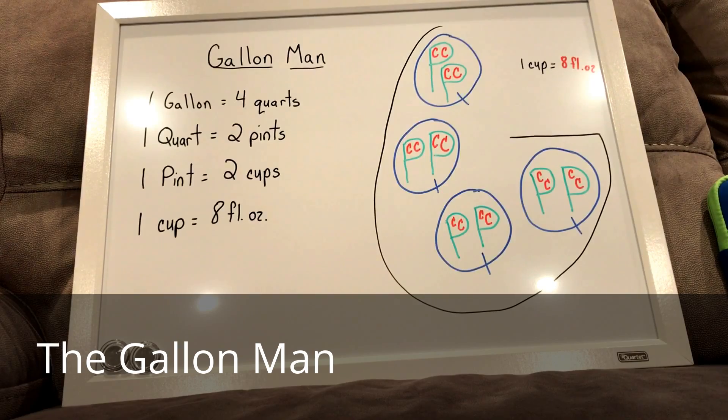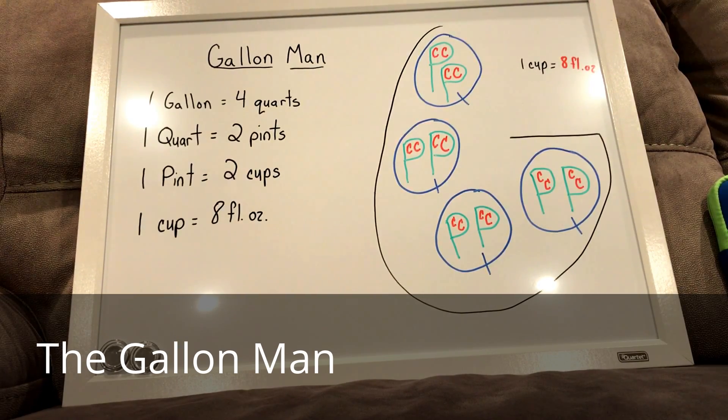So inside of each Q, we have two P's. Each of the P's represent pints. So if we count up how many pints are in a quart, there are two.